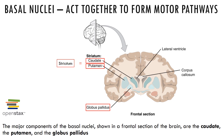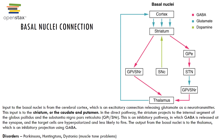The major components of the basal nuclei are the caudate, putamen, and globus pallidus. Diseases or damage to the basal nuclei may result in disorders like Parkinson's or Huntington's disease.